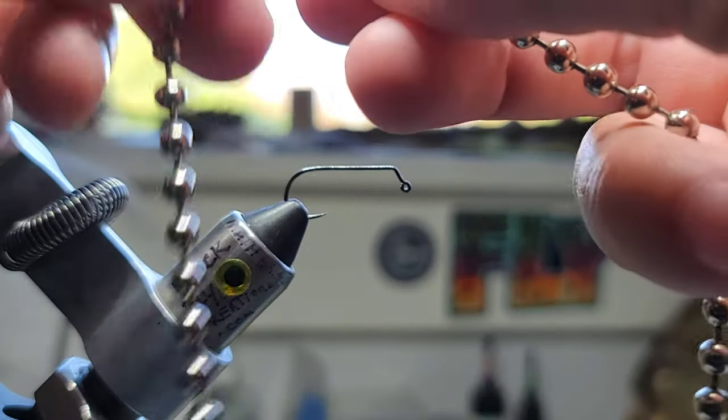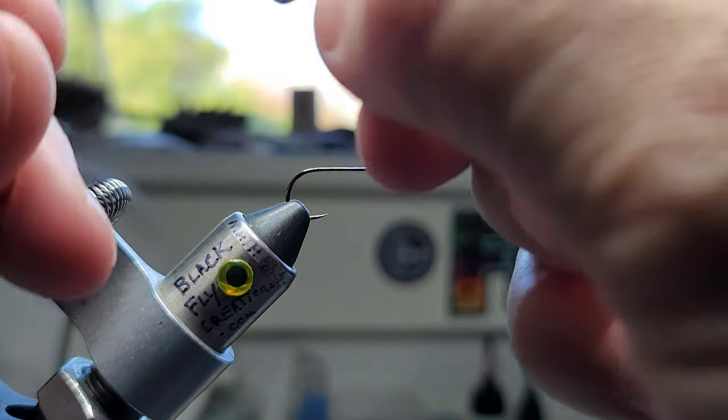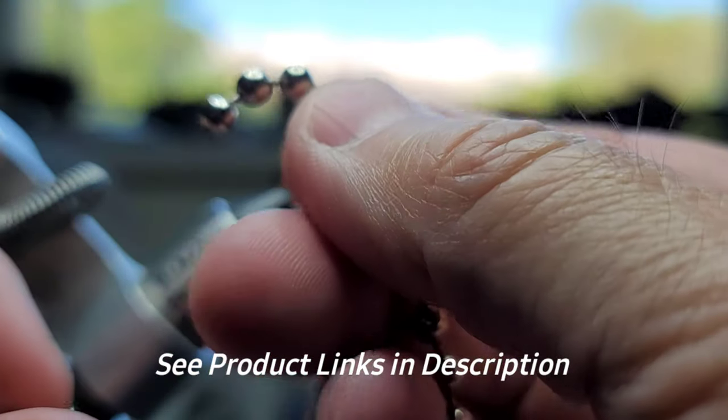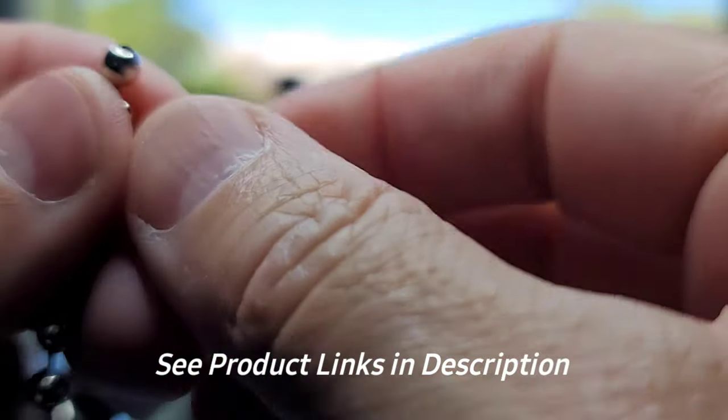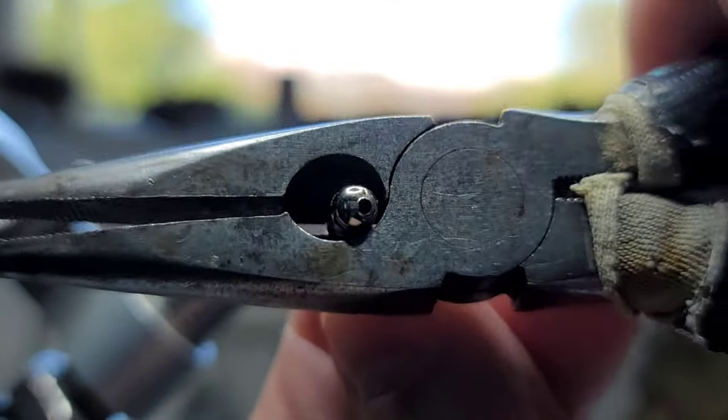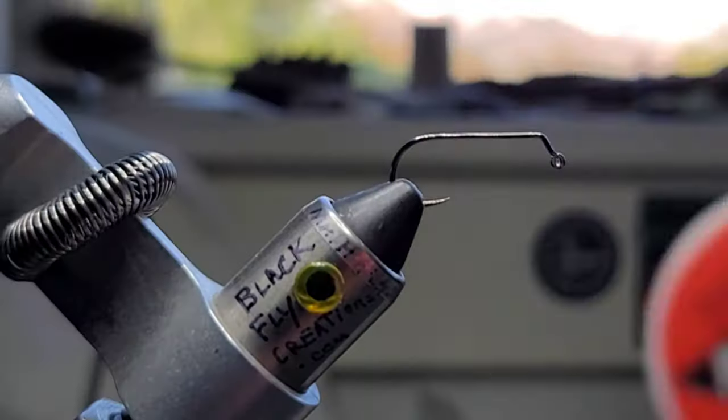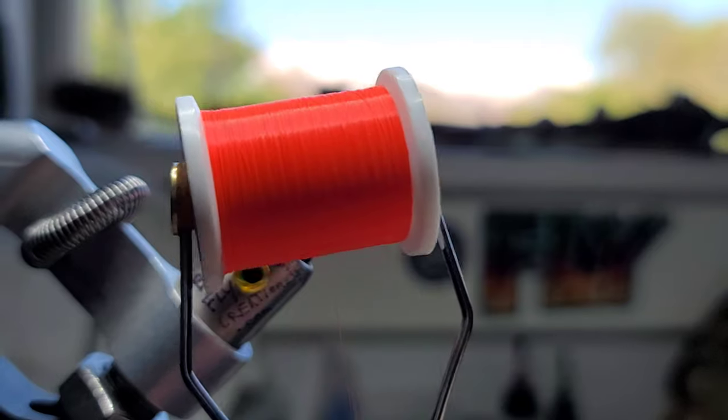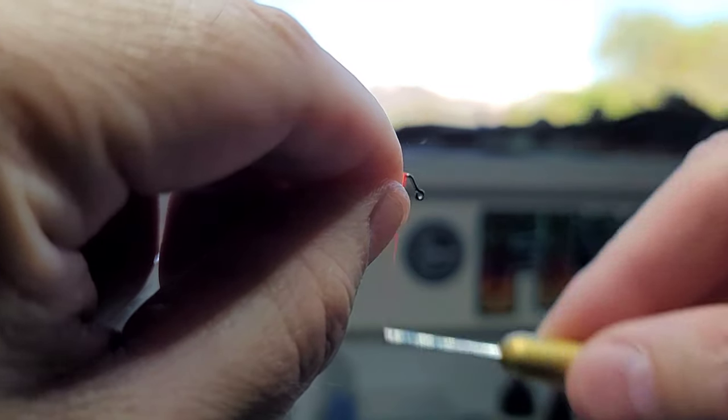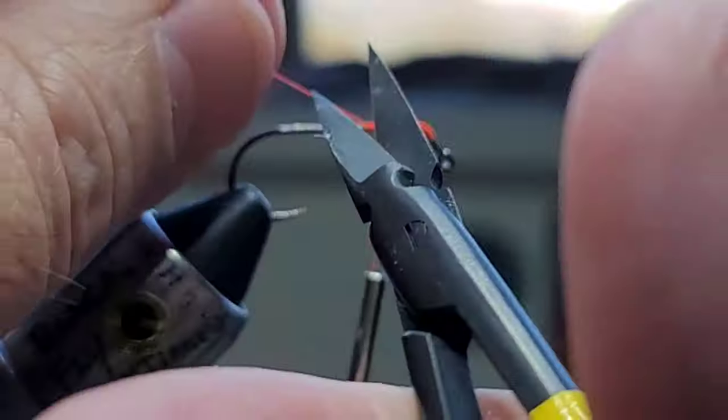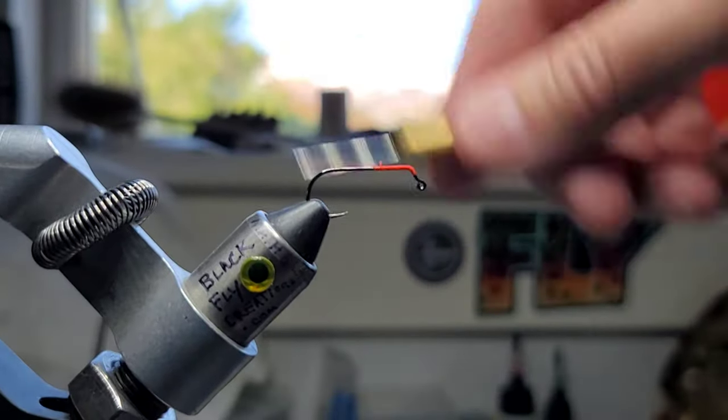Since I don't have any barbell eyes, I've tied with these before - this is just a chain bead necklace. It's like hundreds of eyes. You can buy a 12 inch piece of this at the hardware store or jewelry store. It gives you hundreds of eyes for super cheap. I'm just going to cut two of those off. Red 70 denier thread and a fluorescent orange base layer.